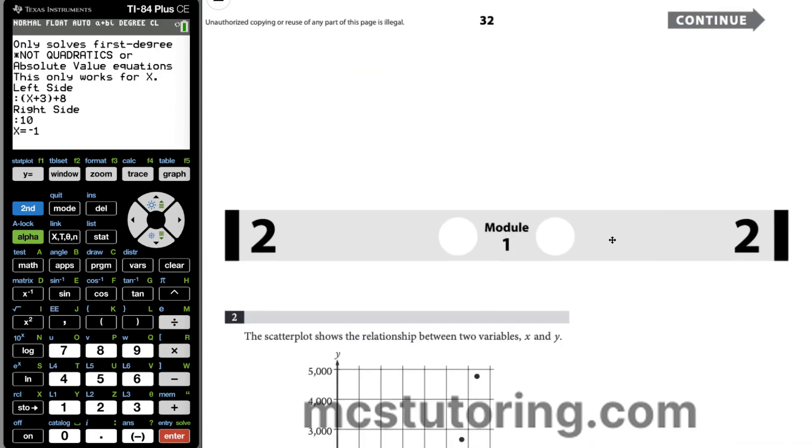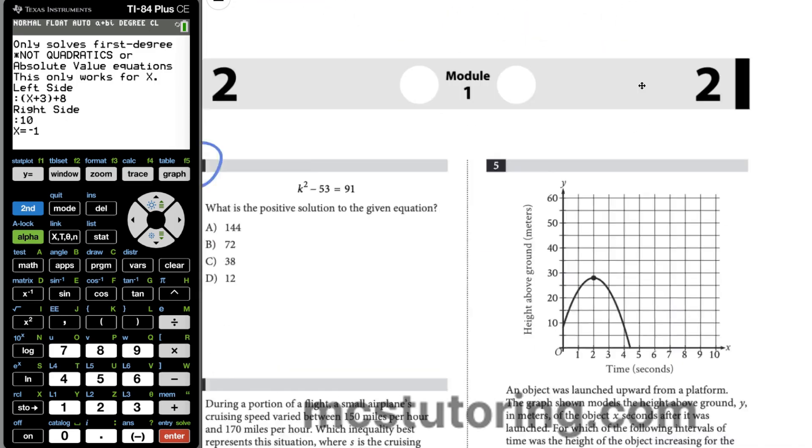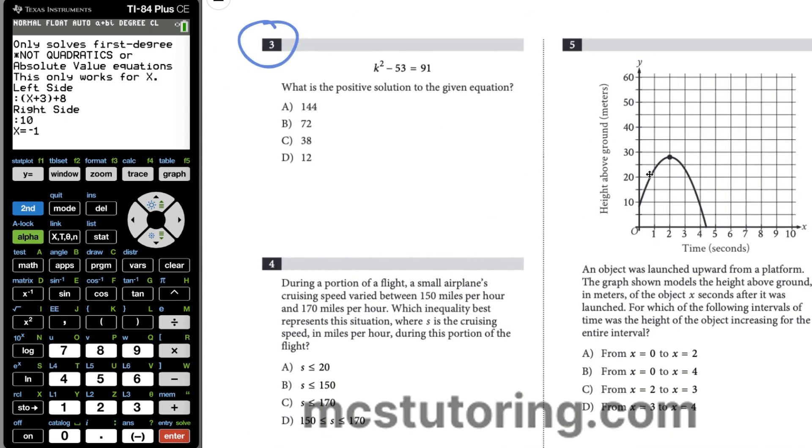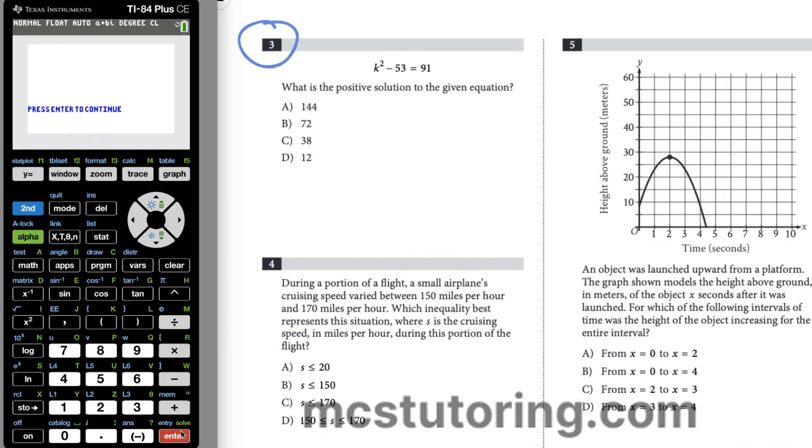We're going to keep scrolling down on the test. I want to use just the questions that are suited to this program, because you could do others on this, but sometimes it's not going to work so well. Positive solution to given equation, we're going to go to option 3 because it's quadratic, that's like an X squared.